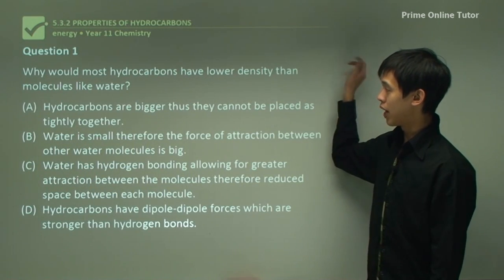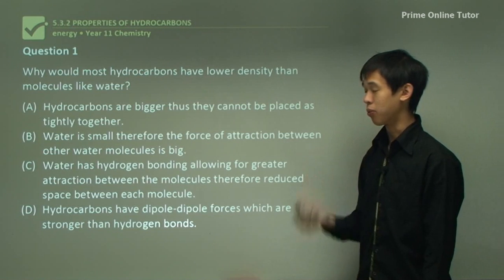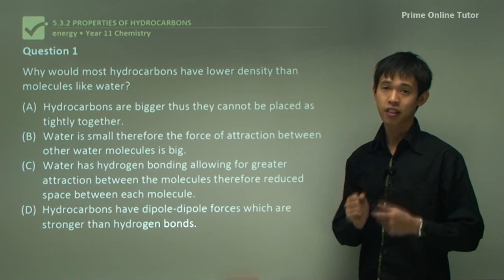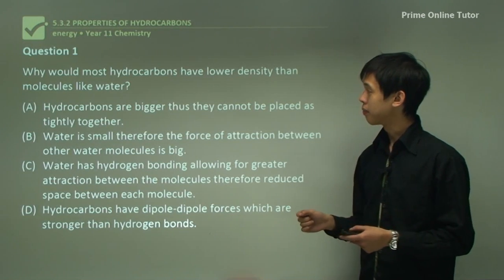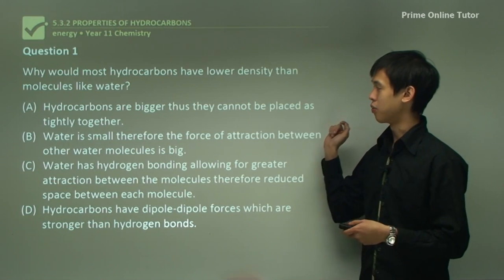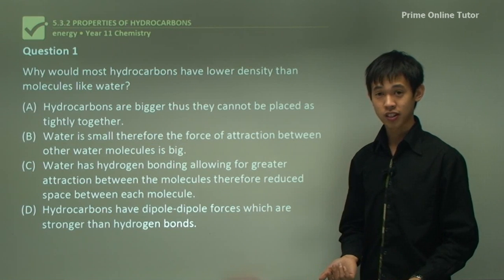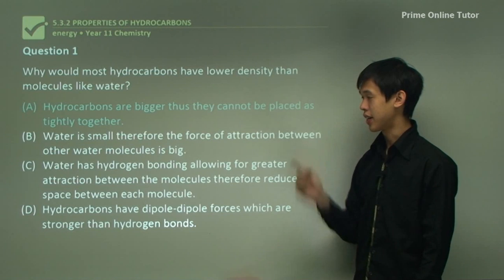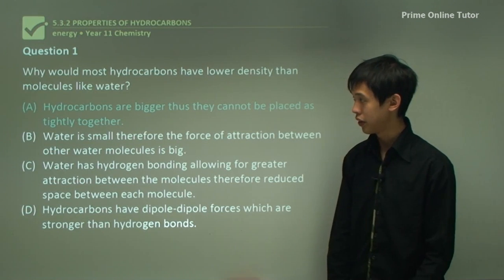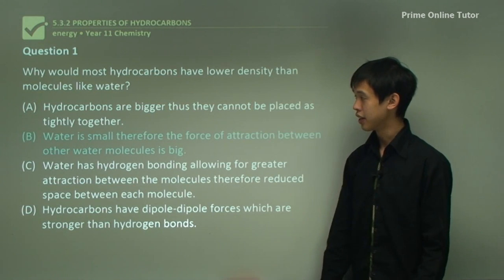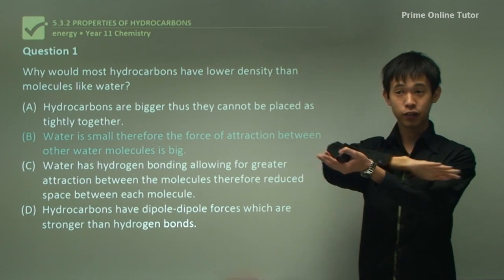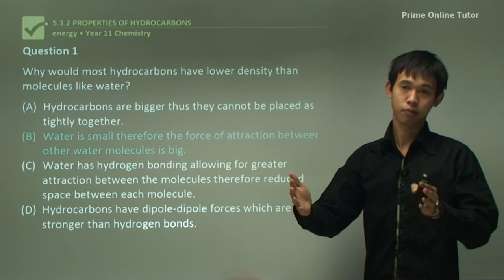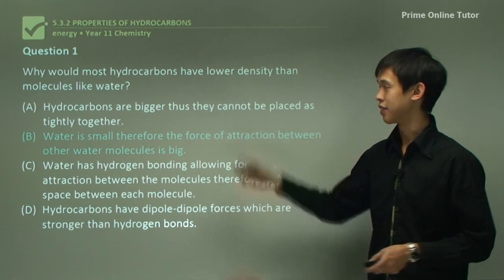Question one: why would most hydrocarbons have lower density than molecules like water? Density is a measure of how tightly together the molecules are. Option A — hydrocarbons are bigger, thus they cannot be placed as tightly together — is not right, because even large substances can be stacked tightly, just think of paper. Option B — water is small, therefore the force of attraction between other molecules is big — is also not true, because the size of the molecule doesn't really tell you much about its molecular forces.